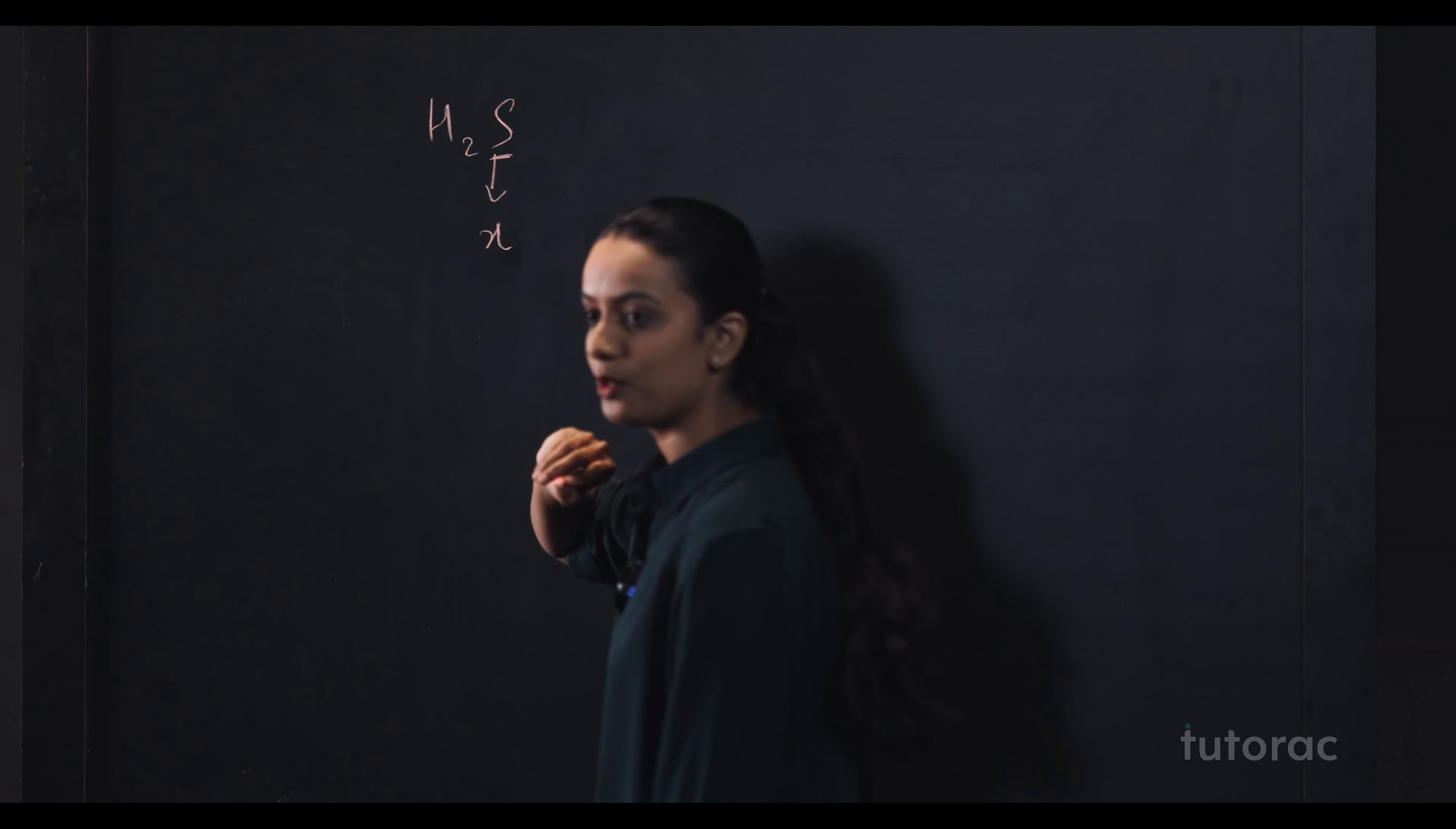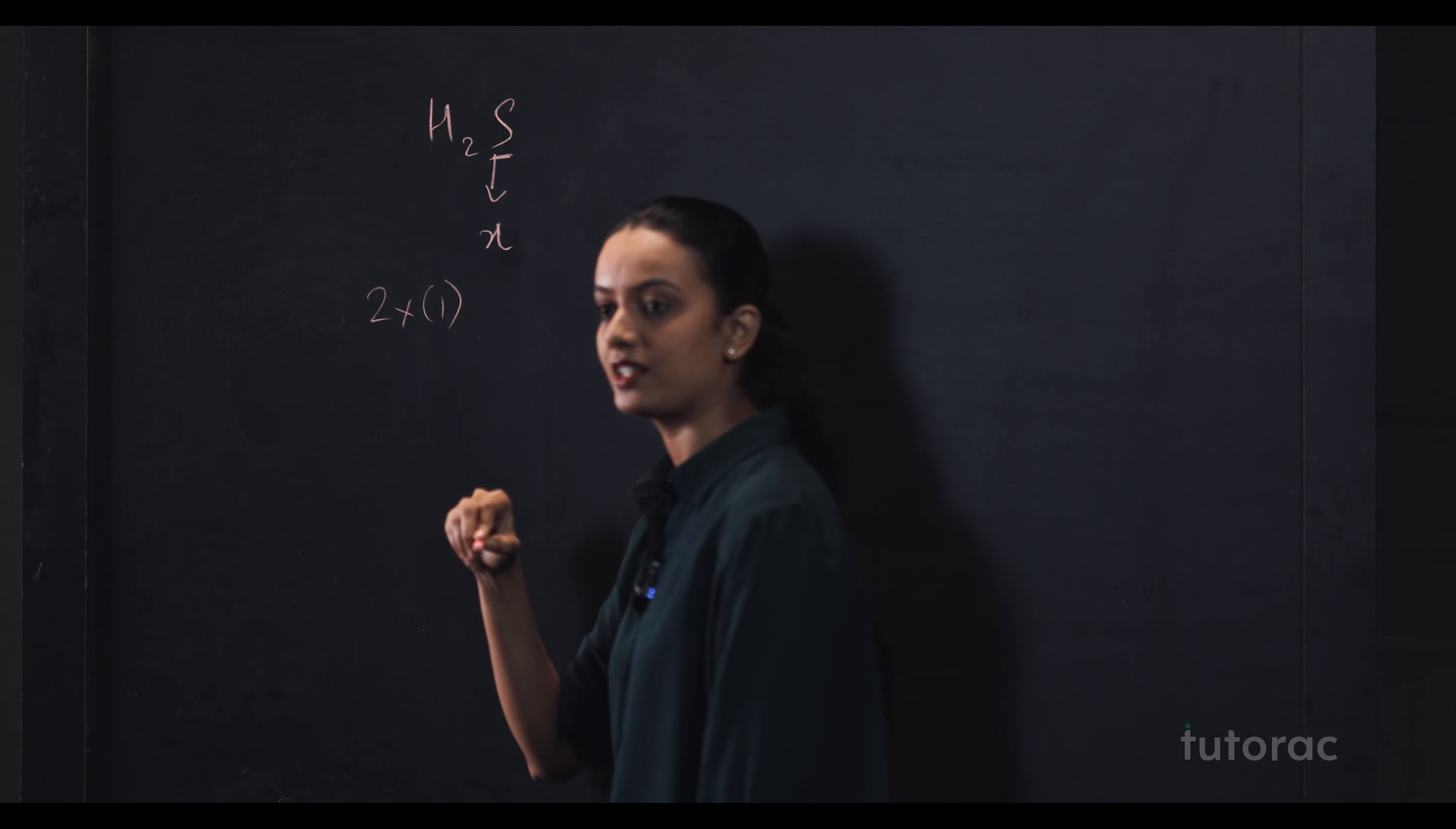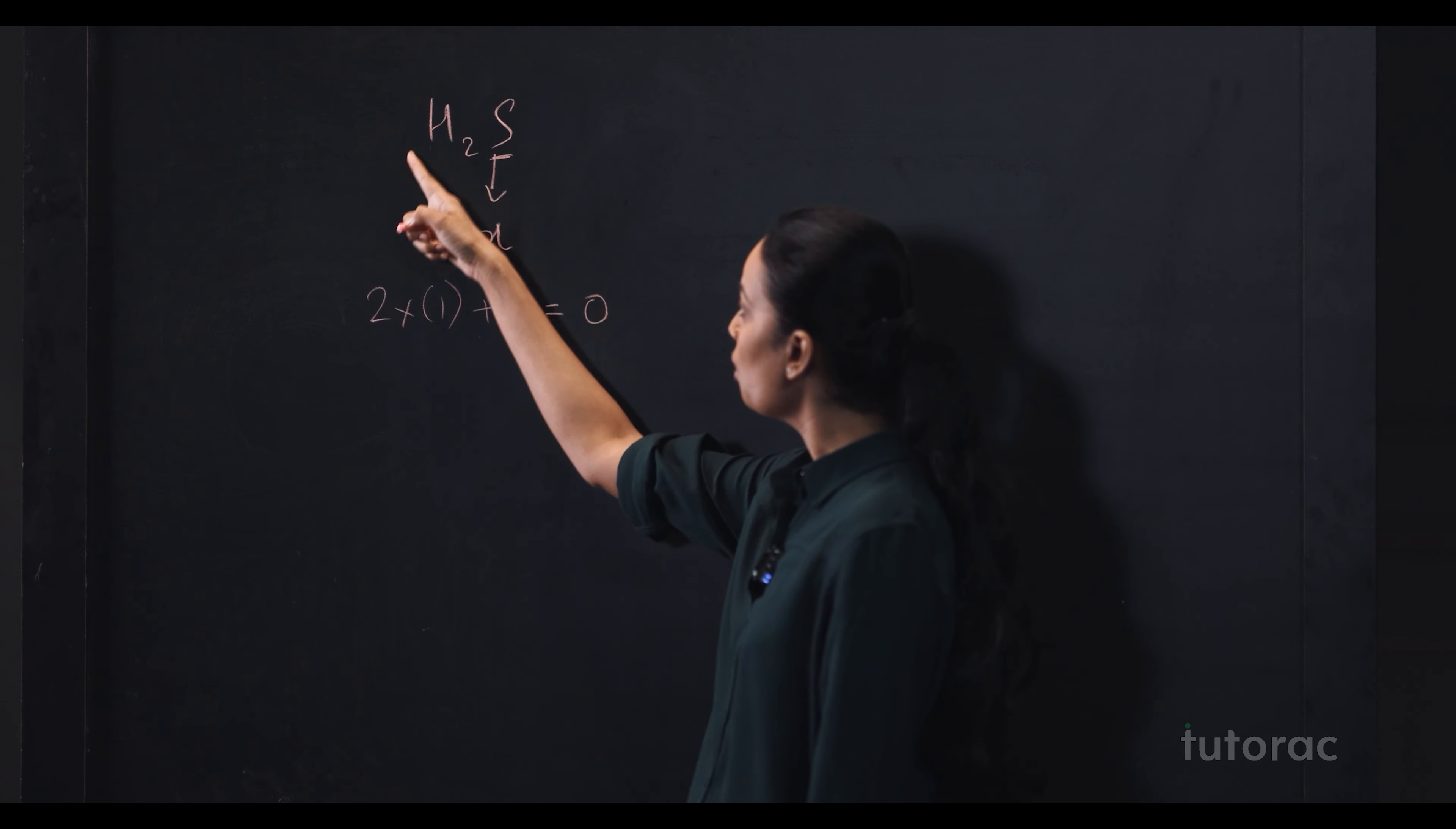oxidation number of hydrogen, you know, that is 1. So, how many hydrogens are here? 2 hydrogens. 2 into its oxidation number, that is 1 plus X